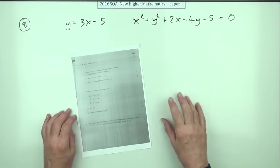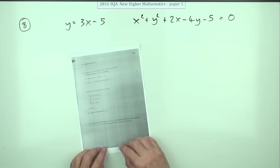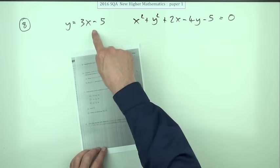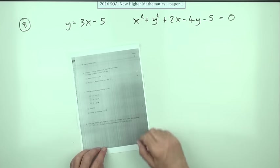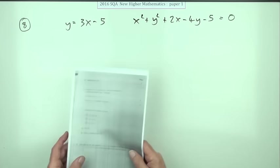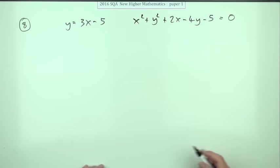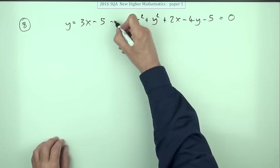Number eight from the 2016 New Higher Maths paper one, five marks. Show that this line is a tangent to this circle and find the point of contact. That's nice and straightforward. We'll just substitute it and I'll just give them names so I can refer to them later.